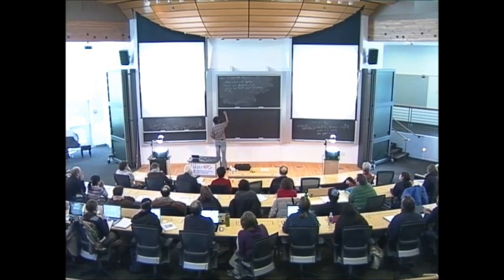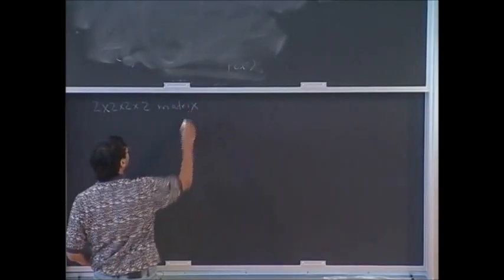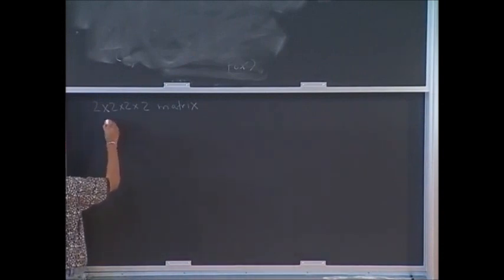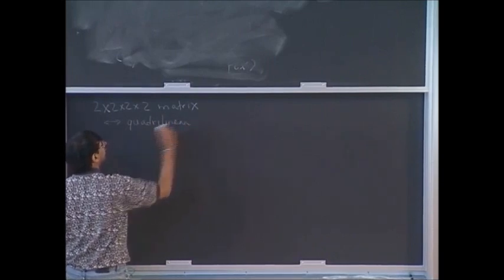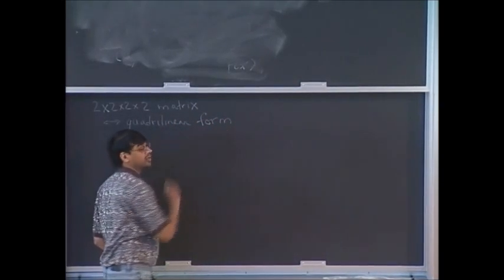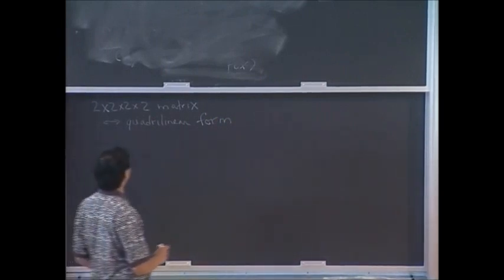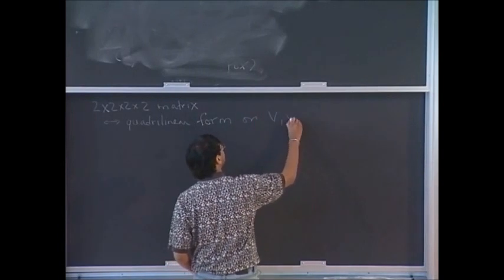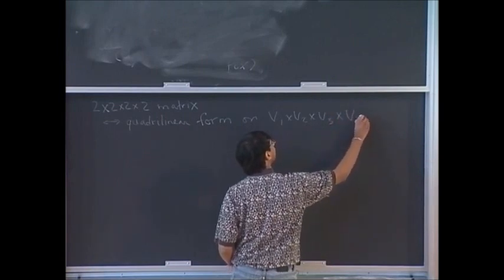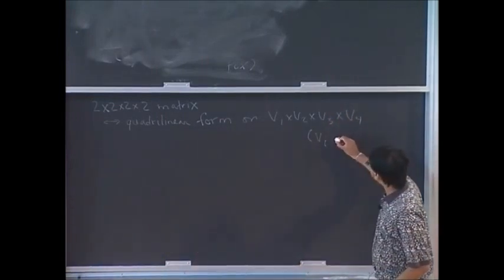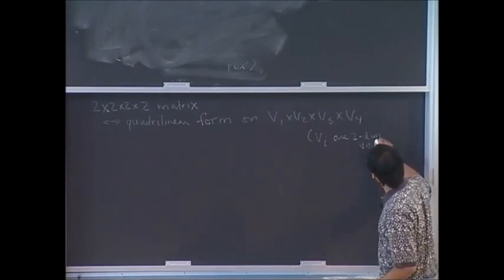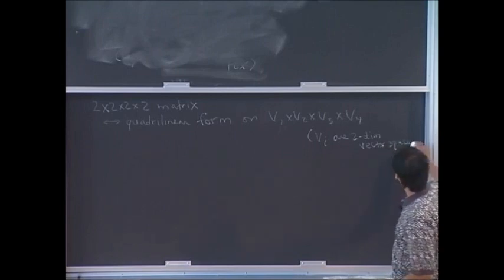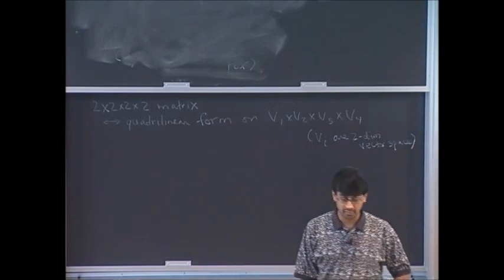You can think of a hypercube as a 2 by 2 by 2 by 2 matrix, which you can think of as a quadrilinear form on a product of four two-dimensional vector spaces — say V1 cross V2 cross V3 cross V4, where these V_i are two-dimensional vector spaces.